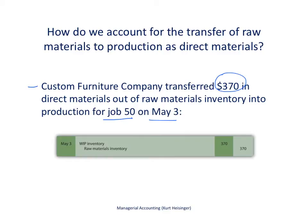The journal entry records the $370 coming out of raw materials inventory and being placed into work in process inventory related to job 50 on May 3rd. As a result of that transfer, we debit work in process inventory $370 — increasing this asset account — and credit raw materials inventory $370, decreasing that asset account. So the entry is: debit work in process inventory $370, credit raw materials inventory $370.